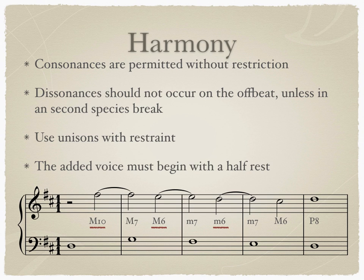Another guideline is to use unisons with restraint. More than two unisons can make a counterpoint tedious. The goal of fourth species is to create a pattern of tied-over dissonances, and too many unisons can interrupt that pattern.